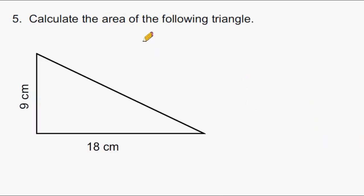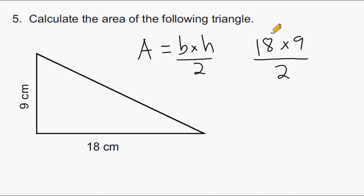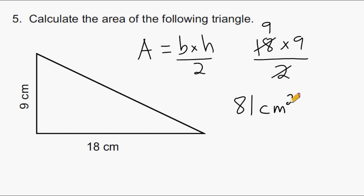To find the area of any triangle, we multiply its base by its height and then divide by 2. We take 18, the length of our triangle's base, and multiply by 9, then divide by 2. I like to take the even number and divide by 2 first — 18 divided by 2 is 9. Then 9 times 9 gives us an area of 81 square centimeters.